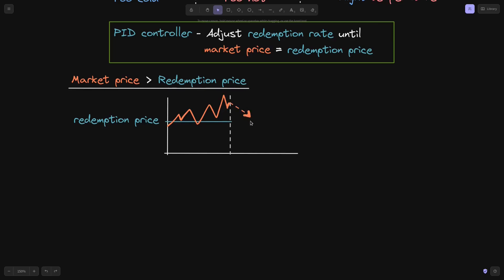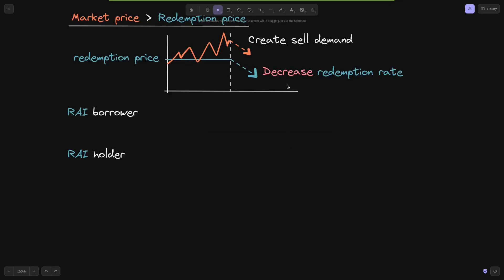To bring the market price down, we need to create sell demand. The way the Rye protocol does this is by decreasing the redemption rate. To understand how this works, we consider two types of participants: the Rye borrower — a user who has opened a Rye safe, deposited ETH collateral, and borrowed Rye — and the Rye holder, which is anyone holding Rye.